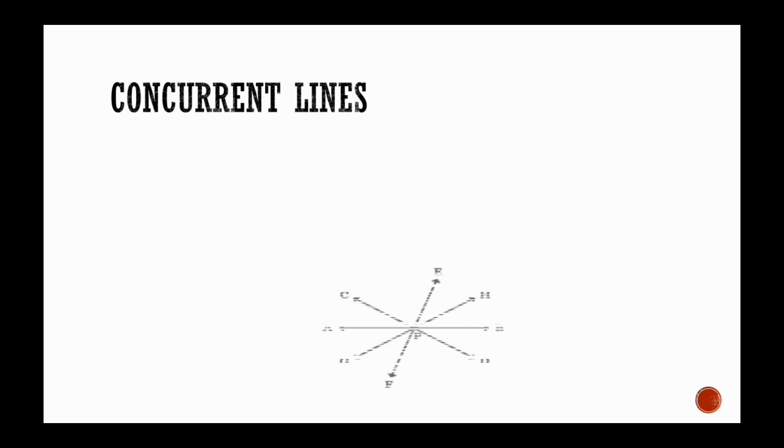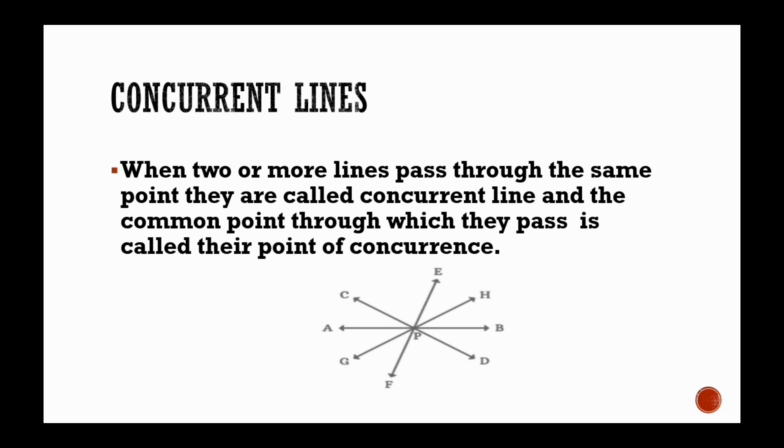Concurrent lines. When two or more lines pass through the same point, they are called concurrent lines.